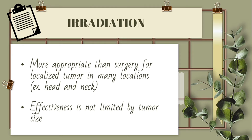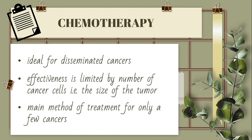Radiation is more appropriate than surgery for localized tumors in many locations like head and neck. Effectiveness is not limited by tumor size. Chemotherapy is ideal for disseminated cancers. Effectiveness is limited by number of cancer cells, that is the size of the tumor, and it is the main method of treatment for only a few cancers.